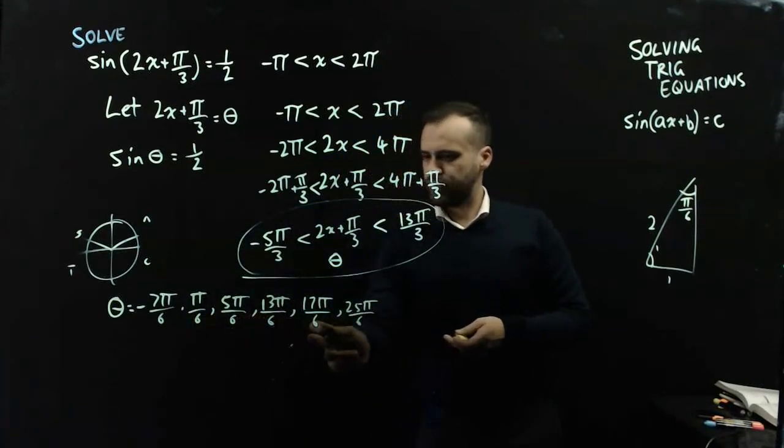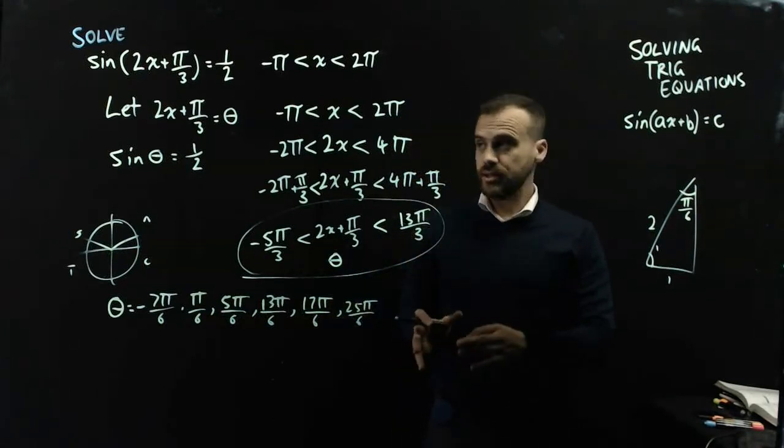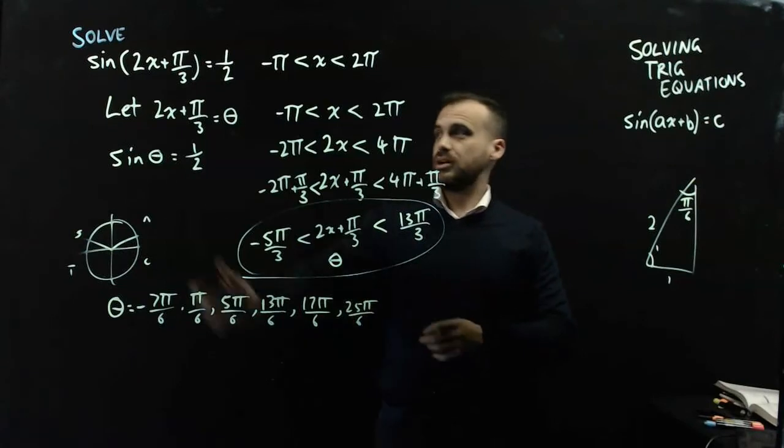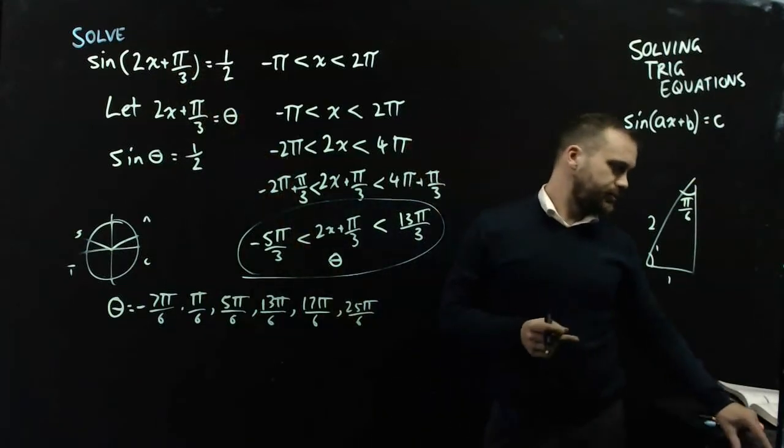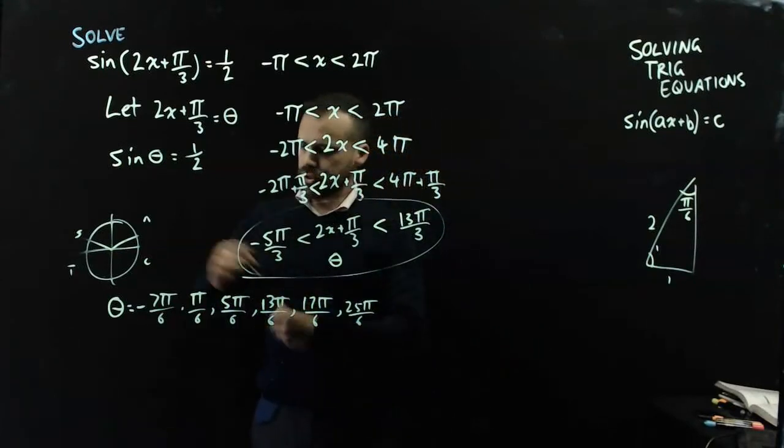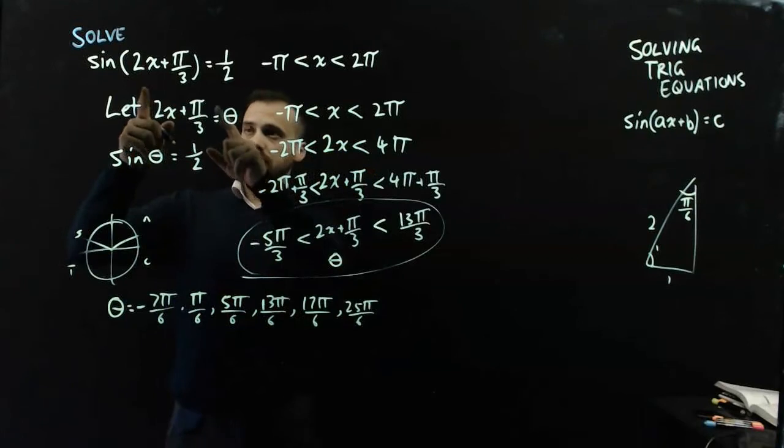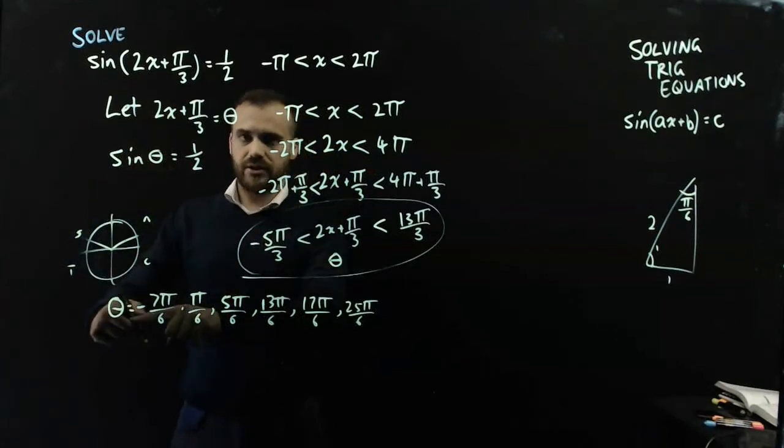Alright, 1, 2, 3, 4, 5, 6 answers. 6 answers for theta, but I don't want to know theta, I want to know x. So of course, that means you have 6 more equations to do, because you're going to have to convert each of these answers to an answer for x, not an answer for theta.